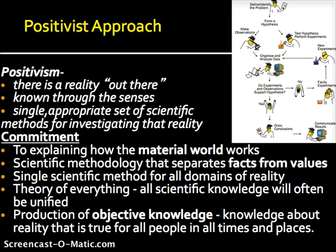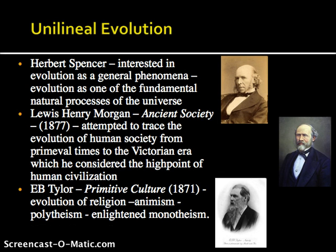This idea of objectivity in the context of science — as we saw in the last lecture — can have the ideas of the time period very much influencing how scientists were thinking. An example of this in the cultural field is the idea of unilineal evolution. Unilineal evolutionists fundamentally believed that their society was at the pinnacle and other societies were inferior. Some of these individuals include Herbert Spencer, who is responsible for the notion of survival of the fittest, which was later attributed to Charles Darwin. Lewis Henry Morgan in Ancient Society (1877) looked at the evolution of human society from primordial times all the way up to the Victorian era, which he considered to be the high point of human civilization.